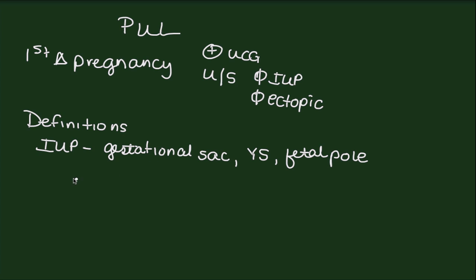When we talk about a diagnosed ectopic on ultrasound we are talking about an adnexal mass with a cystic structure that has a gestational sac and either a yolk sac or fetal pole as well. And so if you use these definitions of intrauterine pregnancy and ectopic pregnancy, what you realize is that there are lots of things that are in between.